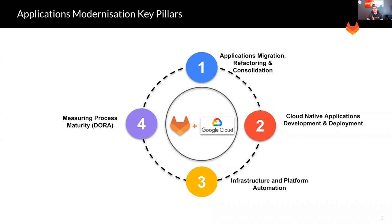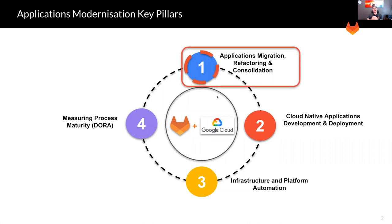The four pillars are: applications migration, refactoring, and consolidation; cloud native applications development and deployment; infrastructure and platform automation; and measuring the overall maturity of the modernization lifecycle using industry-available matrices like the one provided by DORA, the DevOps Research Assistant. In the next few minutes, I will be focusing on how GitLab can help in streamlining and standardizing the application migration, refactoring, and consolidation process.